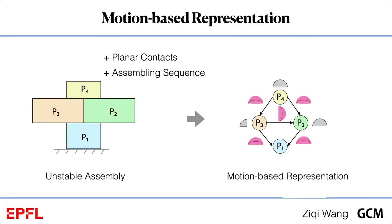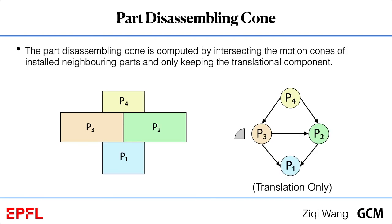Let's move to the second part, the kinematic and geometric design. Before introducing our algorithms, we would like to introduce a motion-based representation which only stores the minimum information for measuring structure stability and part assemblability. Basically, the motion-based representation is the part graph plus motion cones and part disassembling cones. For motion cones, we have explained it in the previous slides. The part disassembling cone P3, for example, is computed by intersecting the motion cones on its outward edges, which are P3P2 and P3P1, and only keeping the translational component. We don't consider the edge P4P3 since when assembling P3, the part P4 has not installed yet.